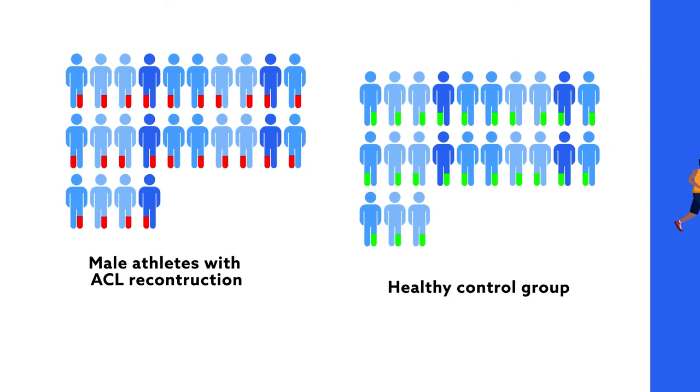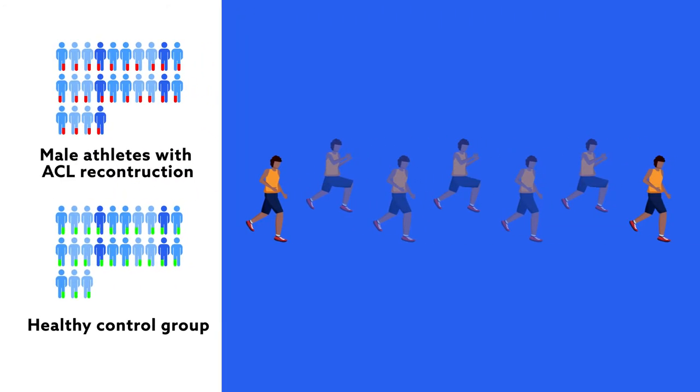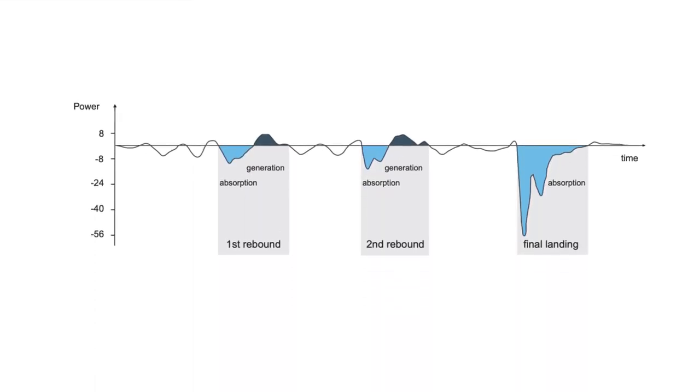The triple hop test is one of several assessments clinicians use to clear athletes to return to sport after ACL surgery. The test consists of an initial propulsion phase, two rebound phases, and a final landing phase.